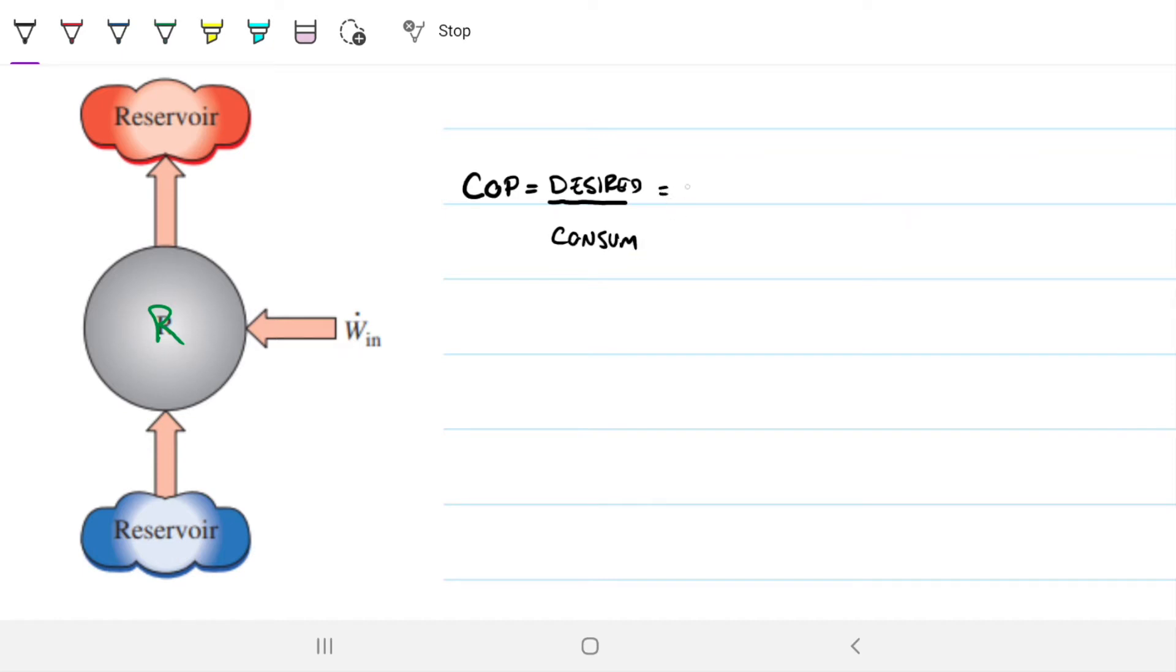Another way to think about it is useful output divided by what you have to pay. And we talked about how for a refrigerator, what we want to maximize is this arrow here.